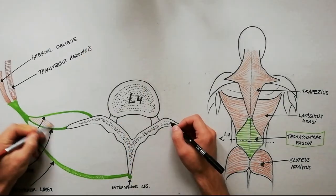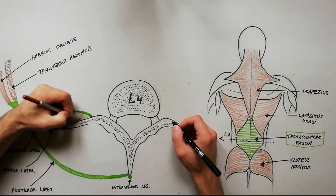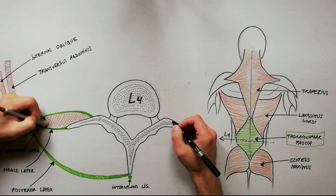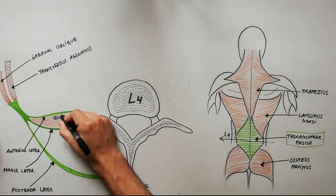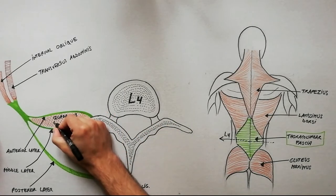Two spaces are formed between these three layers of the fascia. Between the anterior and middle layer lies the quadratus lumborum muscle.